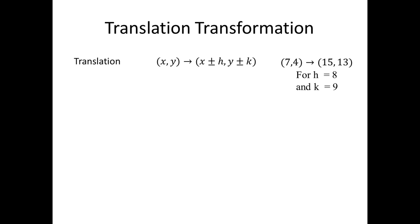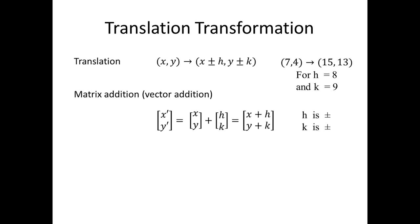Looking at translations first: the translation is given by a coordinate rule where we add a constant value to either x or y or both, and that value could be positive or negative. In the example, we've been following an arbitrary point, 7, 4. For a translation of h=8 in x and k=9 in y, those are just added to the ordered pairs to get 15 and 13 from 7 and 4. The matrix version of this is handled by vector addition, where the new vector x', y' is expressed as the sum of the original vector x, y and the constant vector h, k.